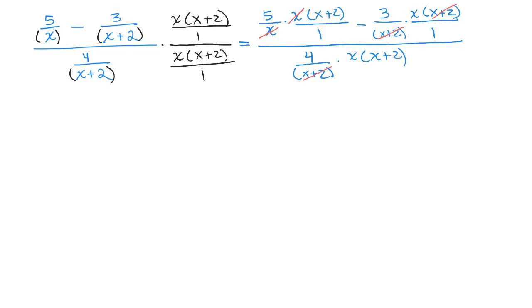This x plus 2 cancels. So what do I have left? In the numerator, I have this 5 times x plus 2 minus 3 times x, which is 3x. And in the denominator, I just have 4x.